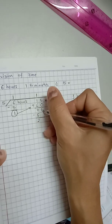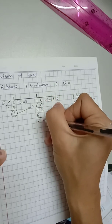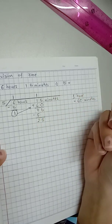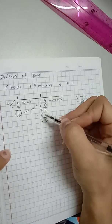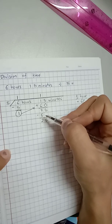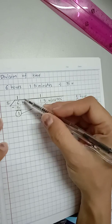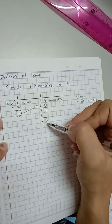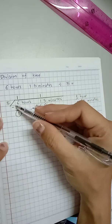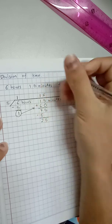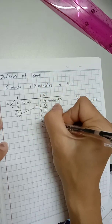Now put number 5 behind number 2. Now the number is 25. What is times 5 will become 25? 5 times 5 is 25.